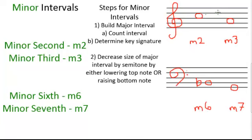The next step after we write in the D is to look at the key signature of the bottom note. The bottom note is a C, so the key signature will be C major. We always take the key signature from the bottom note. We know C major has no sharps or flats. Therefore, the D is within the key signature of C major, and we have a perfectly good major second. Now what we need to do is decrease the size of that major interval by a semitone. We're going to lower the top note by a semitone. This is because we're doing an ascending interval, so we cannot change the bottom note — we can only change the top note. So we're going to lower that D by a semitone, and we will write a flat in front of the D to lower it by the semitone. We now have our minor second.